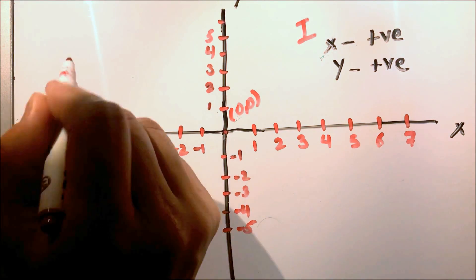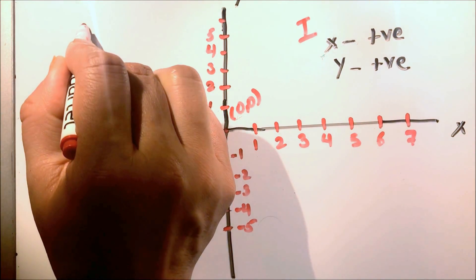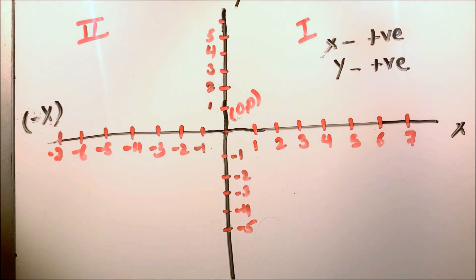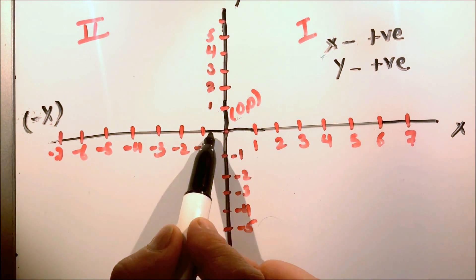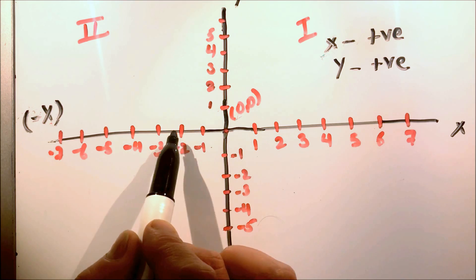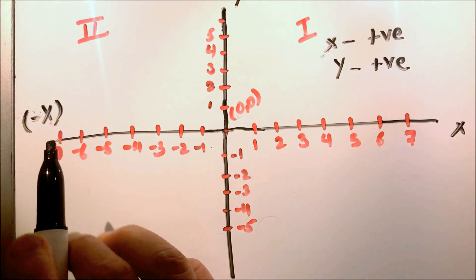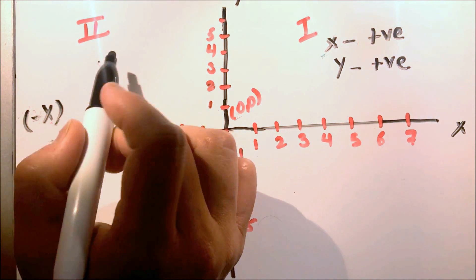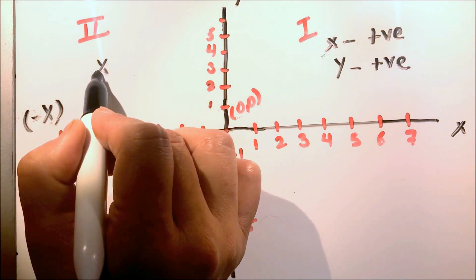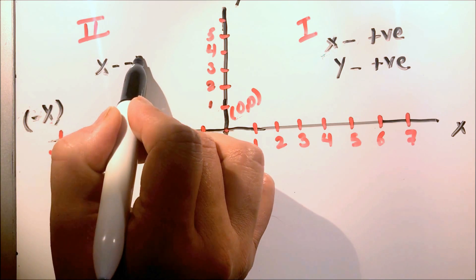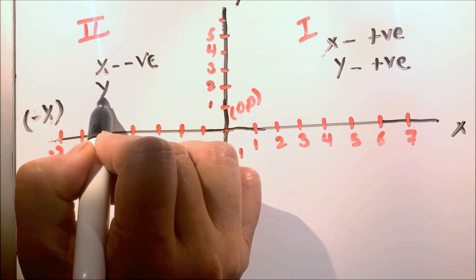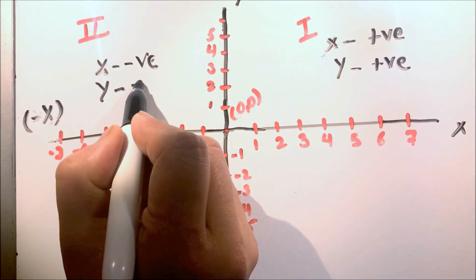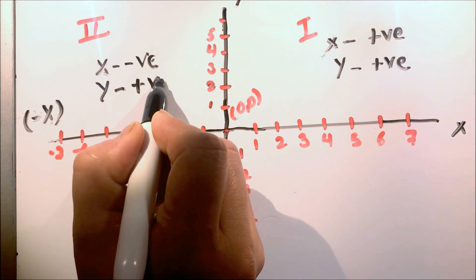In the second quadrant — this is called the second quadrant — x is negative because we are going on the left-hand side. So x is negative, and y is positive because we are going up.